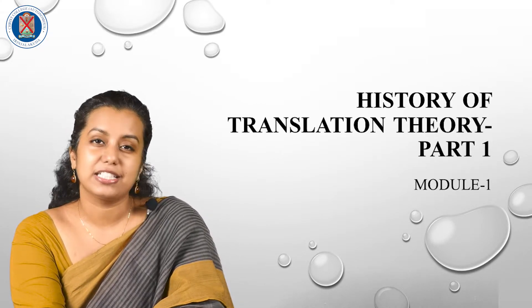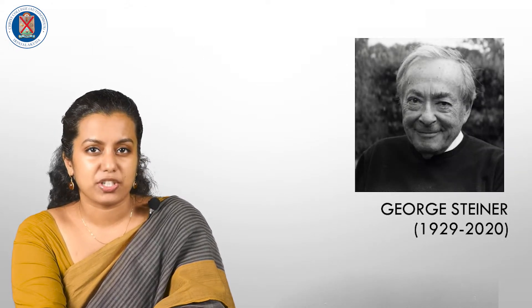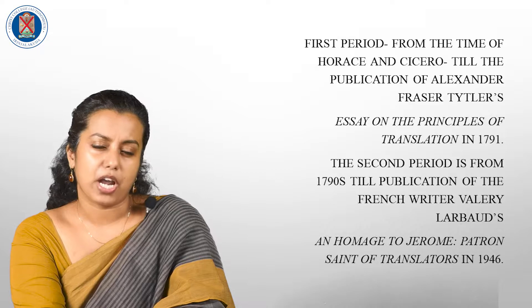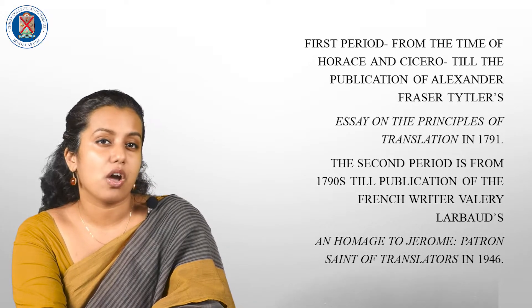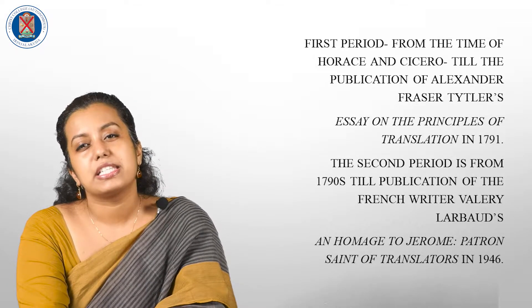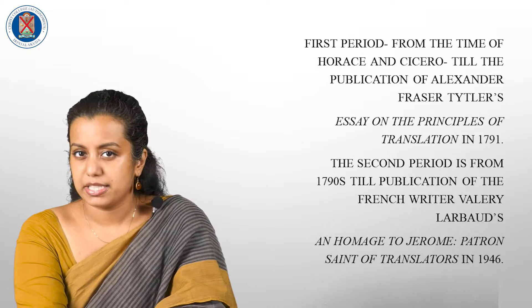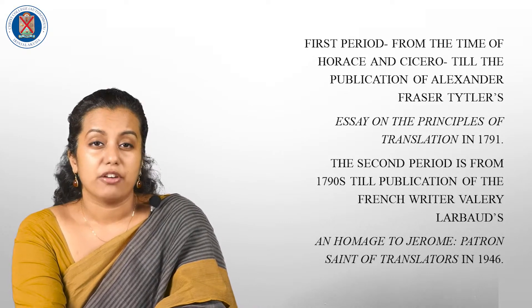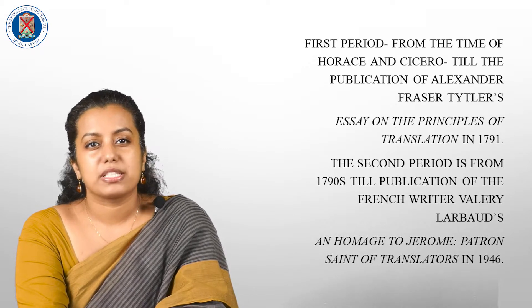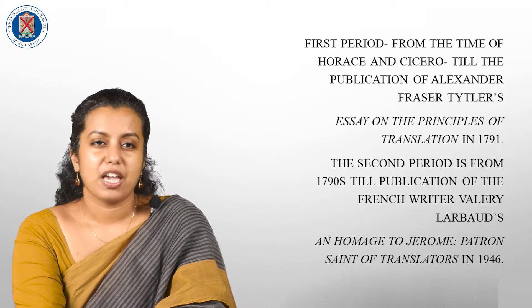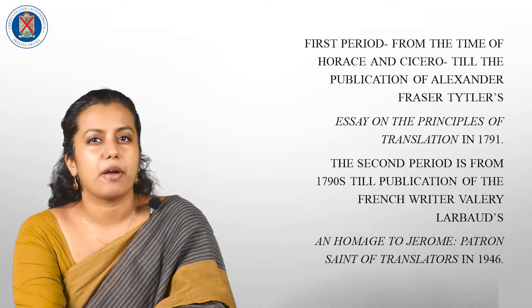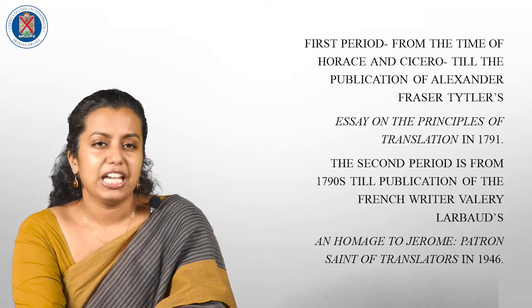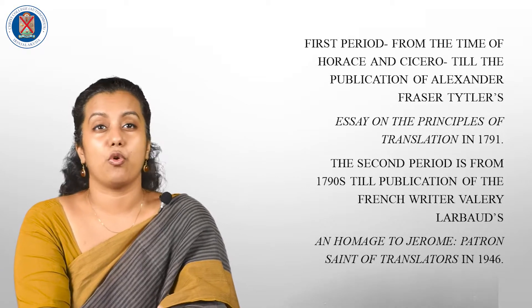Before starting, let's analyze how history of translation was categorized by earlier writers. George Steiner, a Franco-American literary critic and philosopher, divides the history of translation into four stages. The first stage is from around 60s BC, from the time of Horace and Cicero, till the publication of Alexander Fraser Tytler's Essay on the Principles of Translation in 1791. The second period is from the 1790s till 1946. The third period begins with machine translation in the 1940s till the 60s. The fourth period is from the 1960s to the current period.